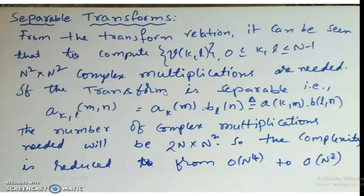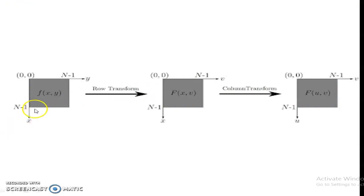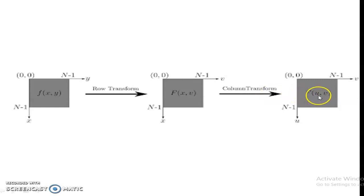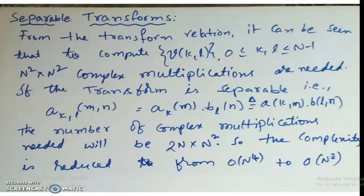Now let us move to separable transforms. For a separable transform, you apply a one-dimensional transform along the rows of an image f(x,y) to get f(x,v), then apply a column transform to get f(u,v). This should be the same as a direct two-dimensional transform from f(x,y) to f(u,v). If this holds, the transform is called a separable transform.